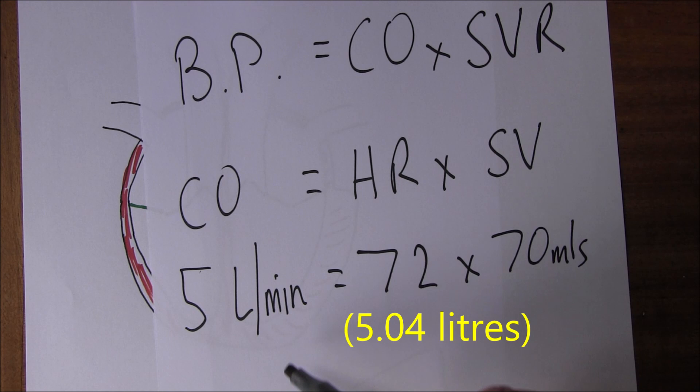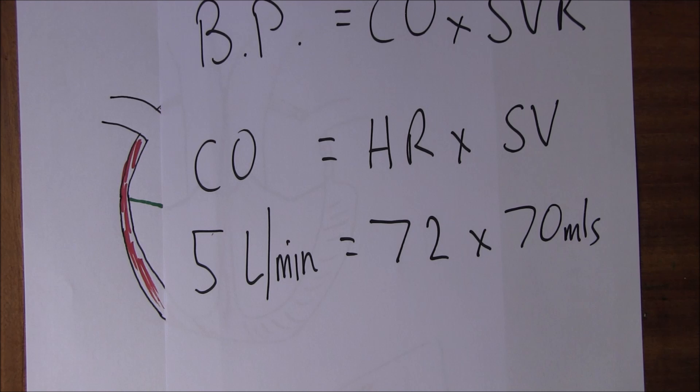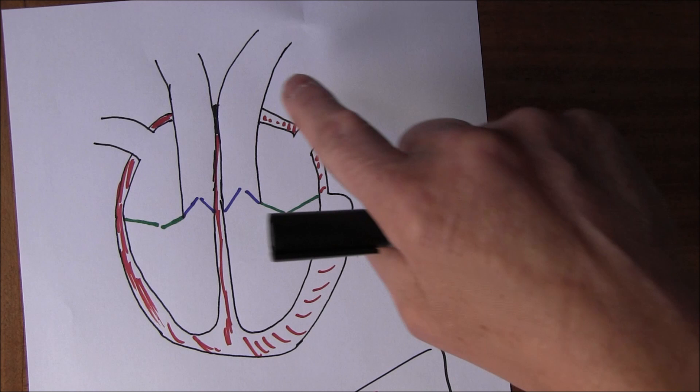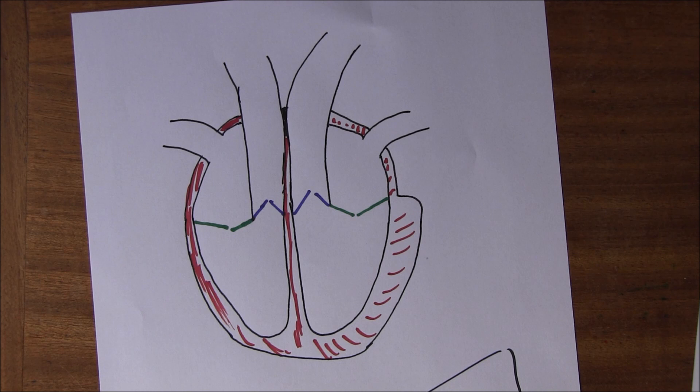Five litres per minute is fascinating because it is roughly equivalent to the total volume of blood in the body. This means all of the blood volume is passing through a particular part of the circulatory system - such as the left ventricle - within a one-minute period. Cardiac output is also dependent on venous return. If blood is not coming back to the heart, the ventricle cannot pump it out.